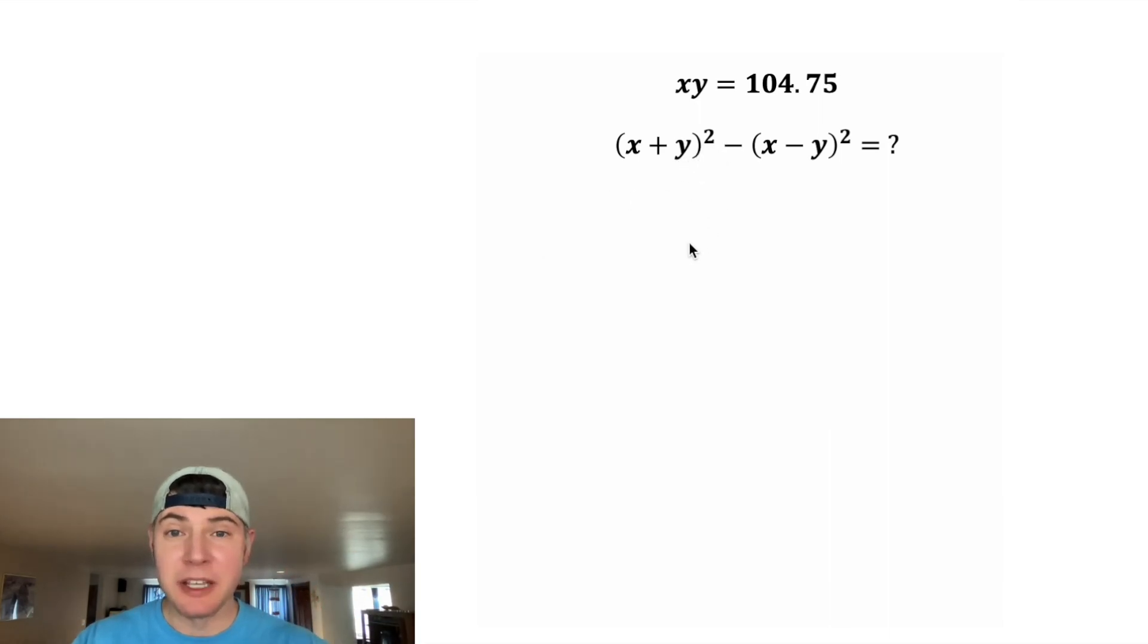This x plus y squared means x plus y times x plus y. And then we're going to subtract this x minus y multiplied by x minus y. There is a shortcut for this.